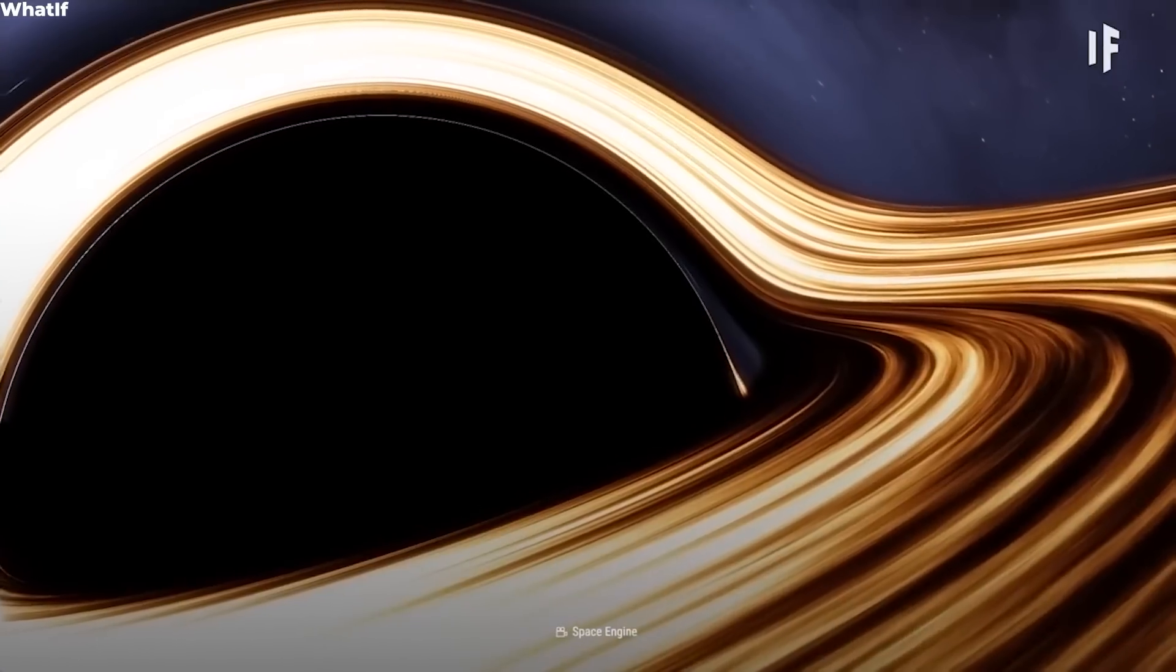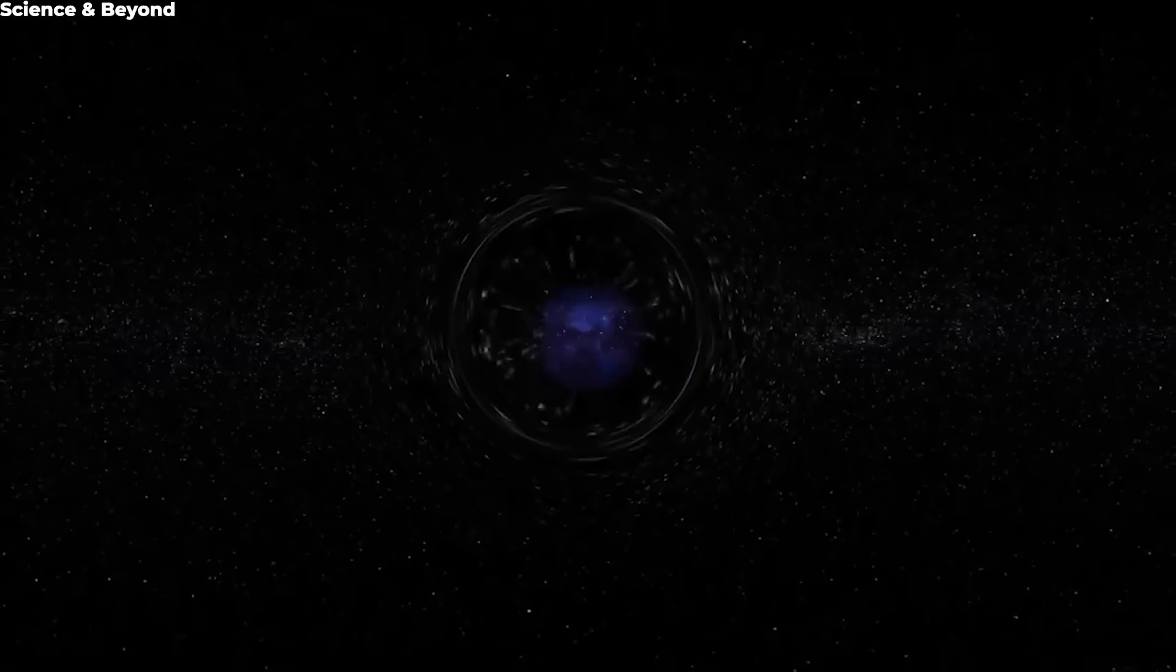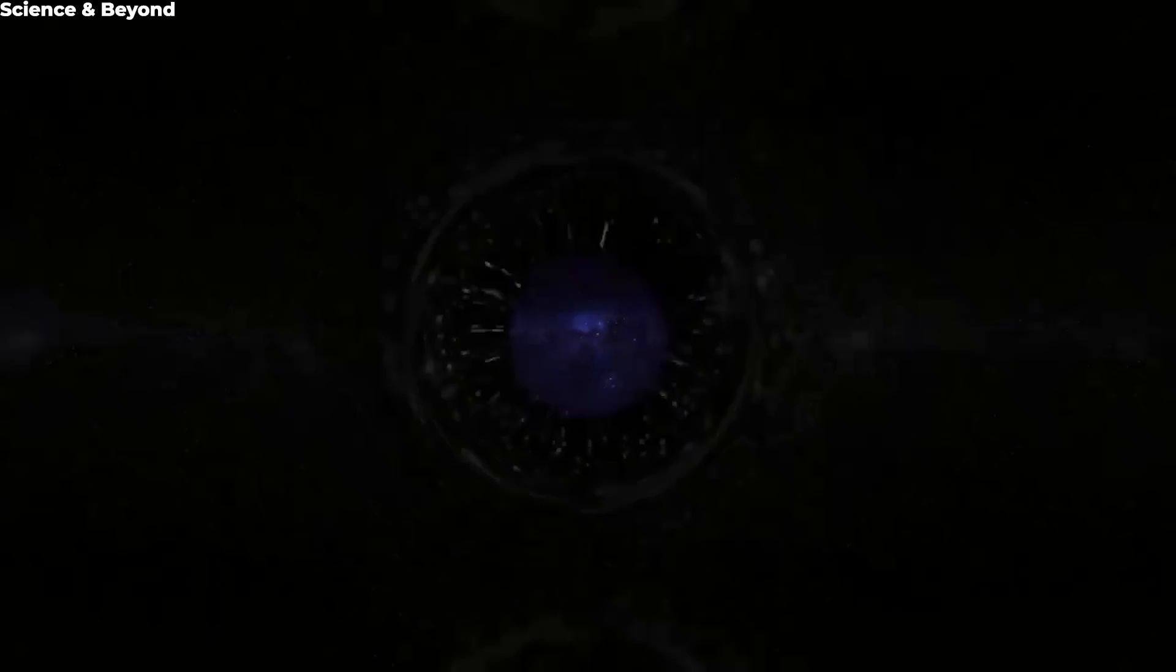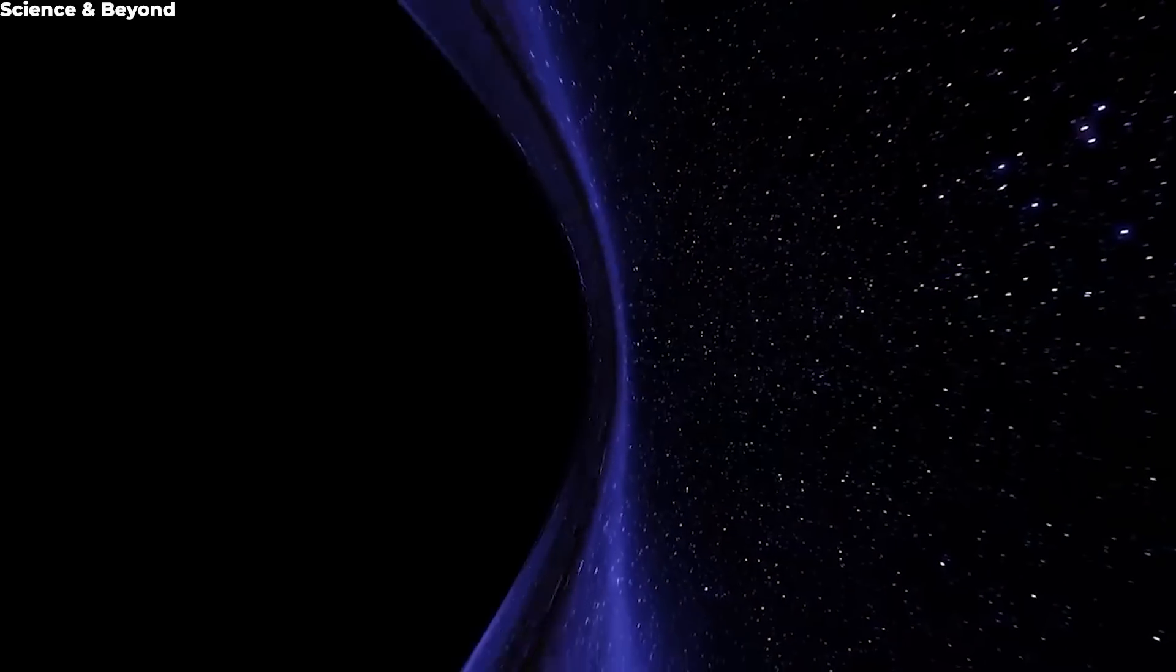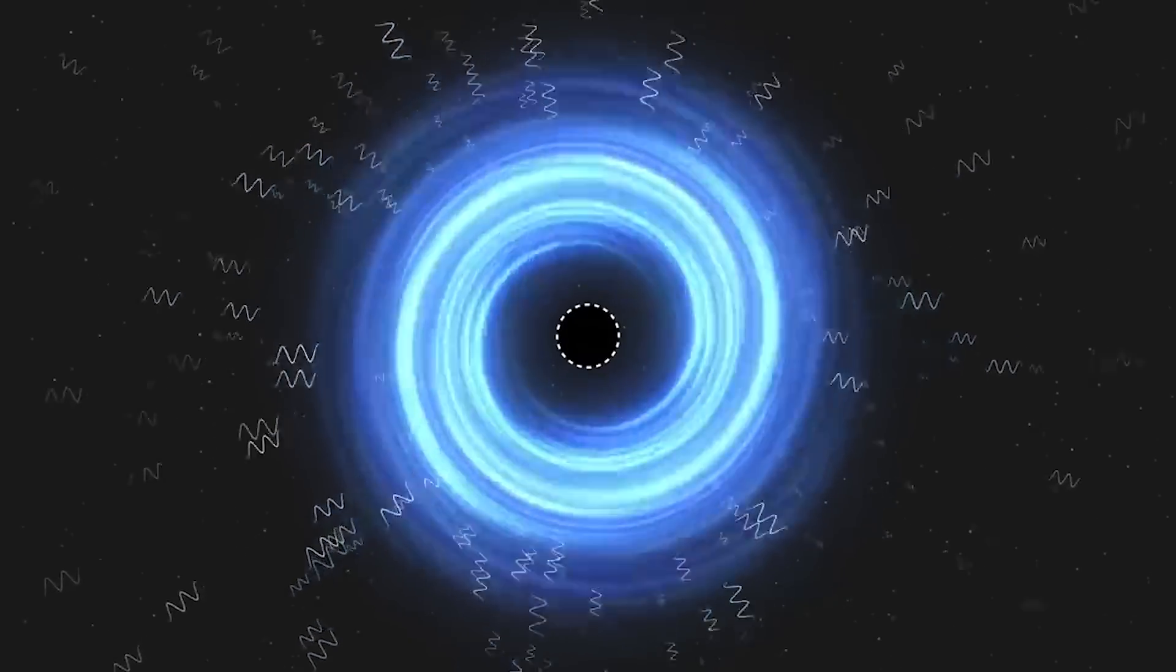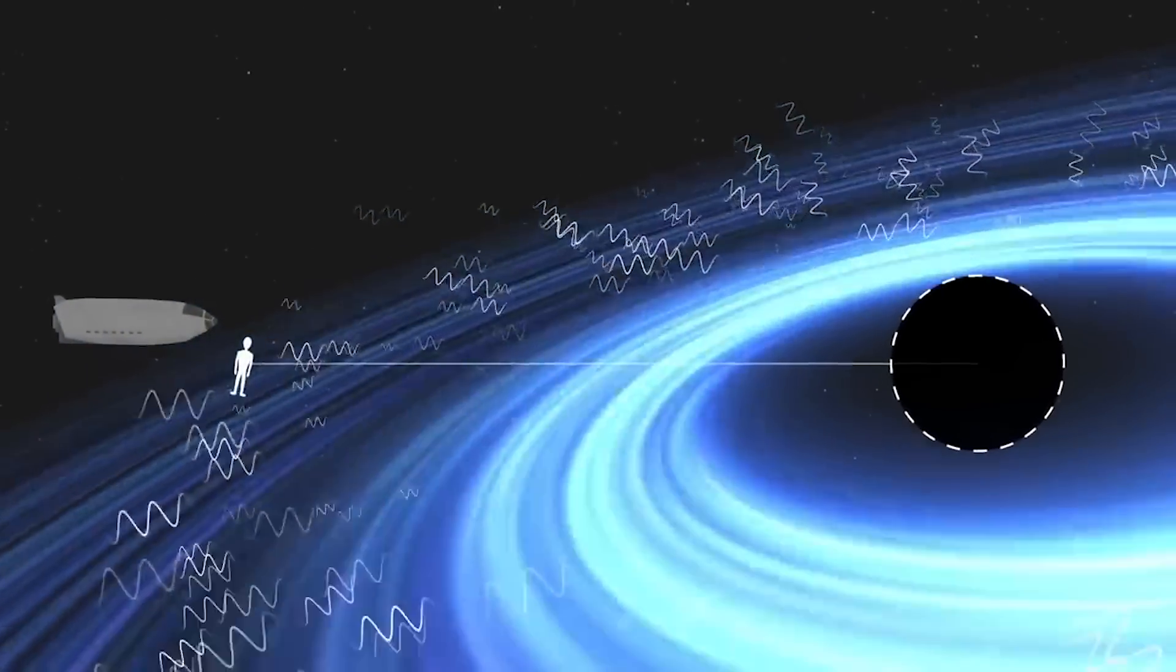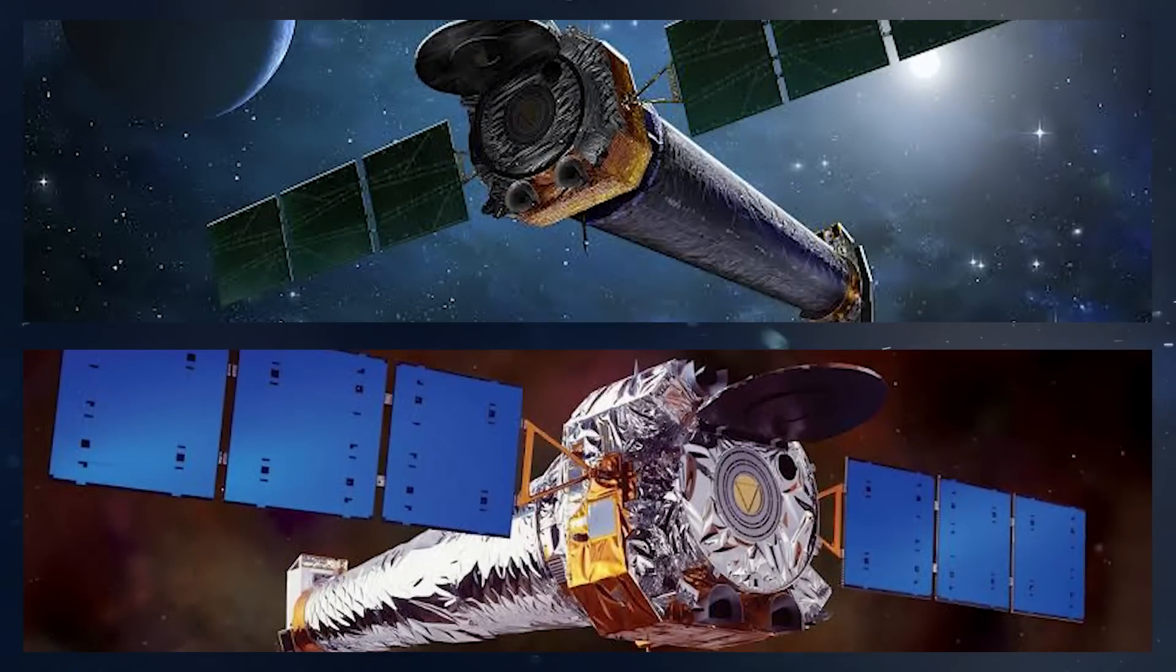Before the probe falls into the black hole, it must transmit its data to nearby onlookers. A difficulty emerges here. The probe appears to slow down as it approaches the event horizon and eventually stops. As a result, the probe must communicate the last of its data as soon as possible, or the radio signals will be redshifted beyond recognition.